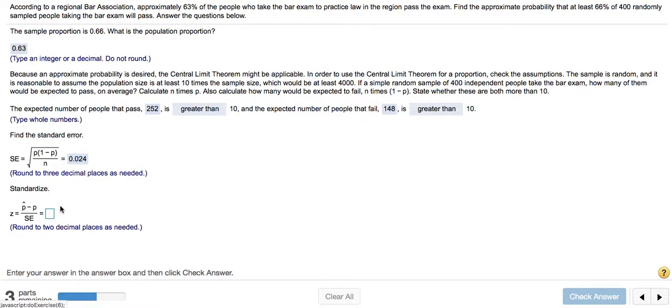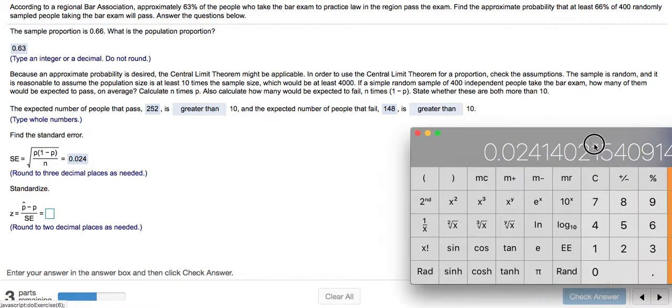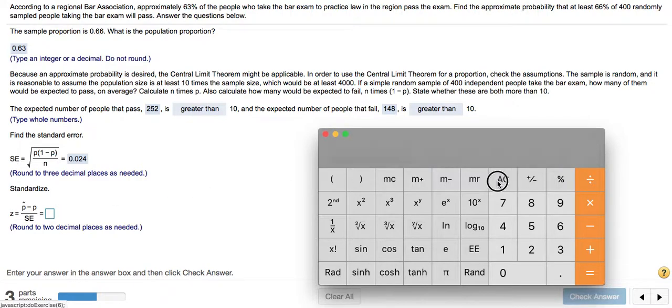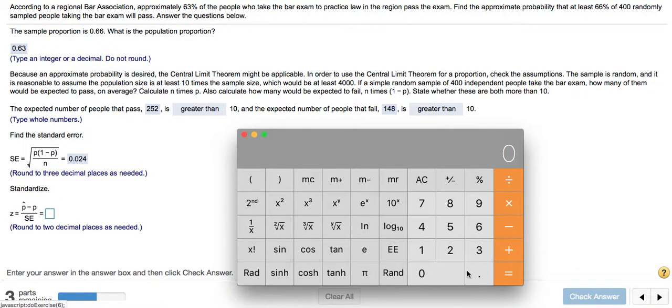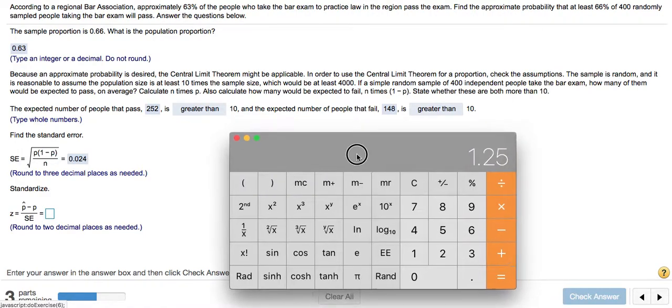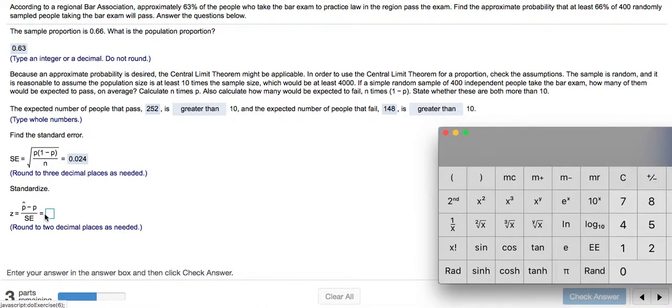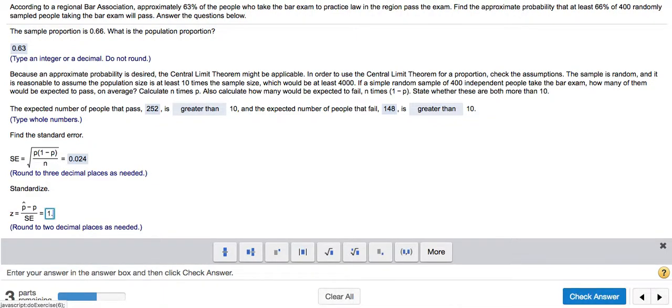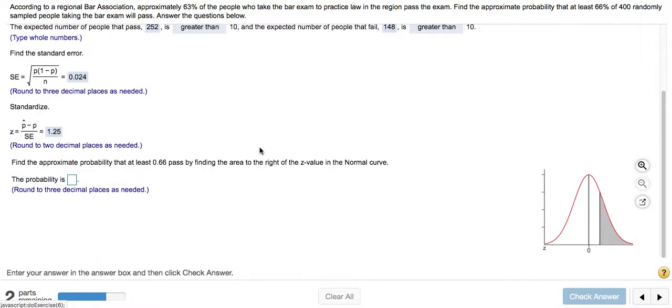Now they're asking us to use a z-score. If we want a test statistic or a z-score for the values that appear within this problem, we take this value, which is 0.66 (that's what p hat represents), subtract 0.63 (that's p), and divide by the standard error. So 0.66 minus 0.63, divided by 0.024, and we get a z-score of 1.25.